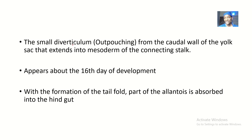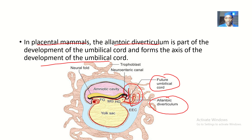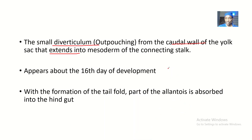The allantoic diverticulum is basically a small diverticulum — an outpushing from the caudal wall of the yolk sac — and it extends into the mesoderm of the connecting stalk. So it is extending from the yolk sac and entering what is known as the connecting stalk, which later goes on to become the umbilical cord. So the connecting stalk can be called the future umbilical cord.